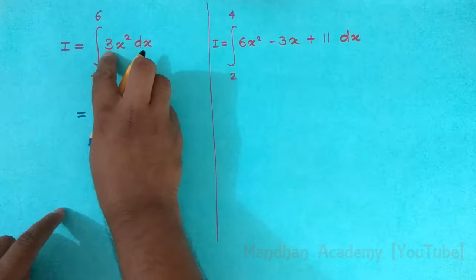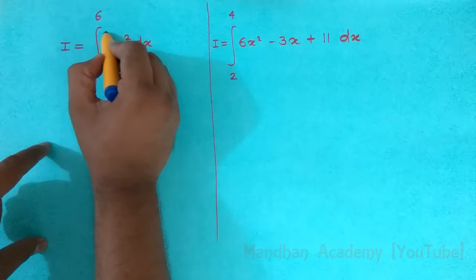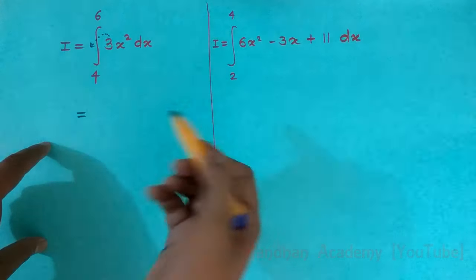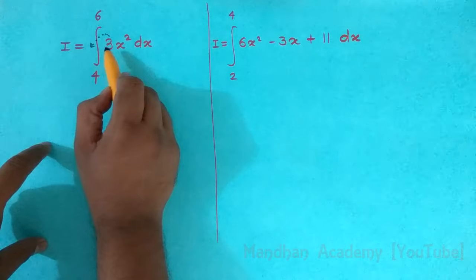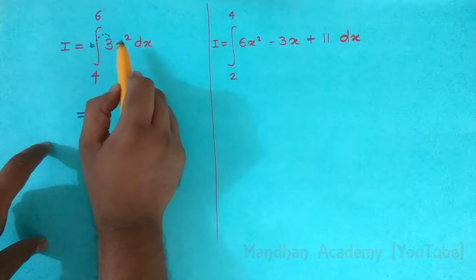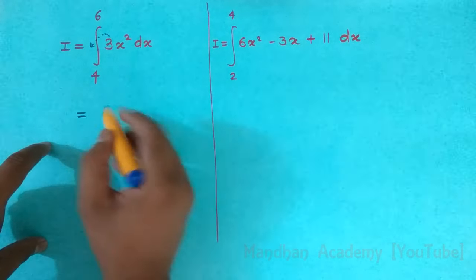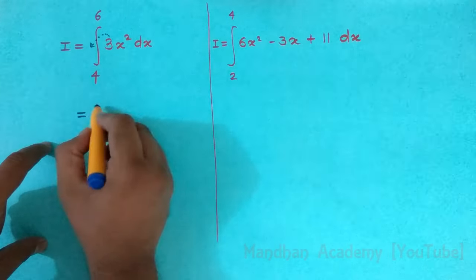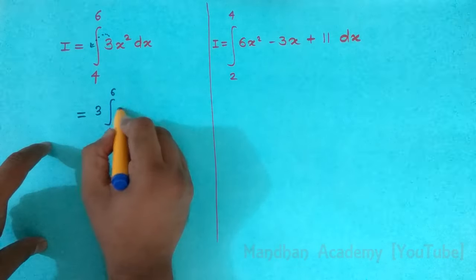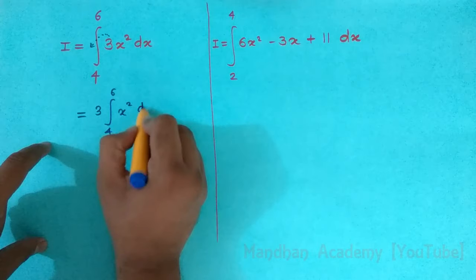First of all according to constant rule, take 3 outside. The constant rule says that if a number or a constant is getting multiplied with a variable, you can take it outside. So here 3, these are also called as limits, x square dx.